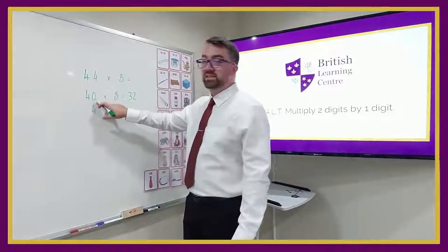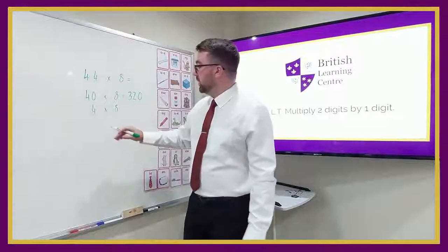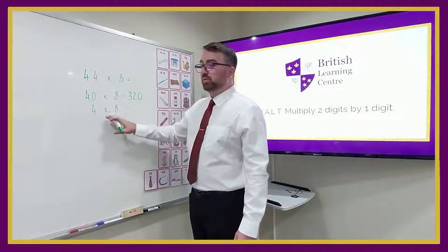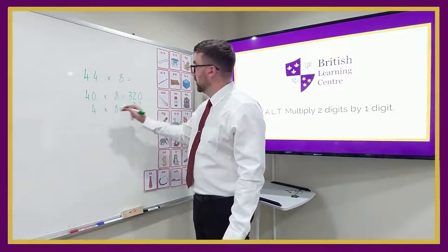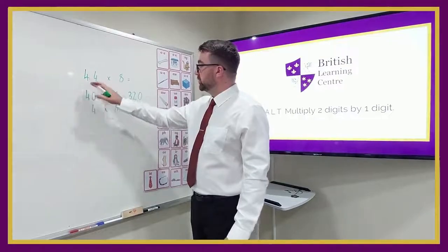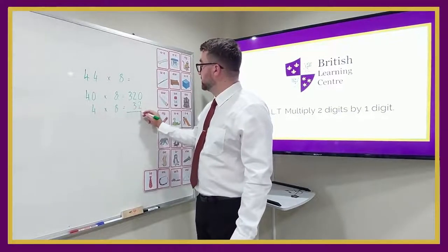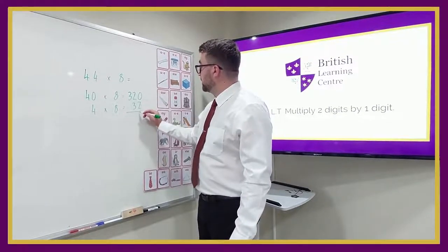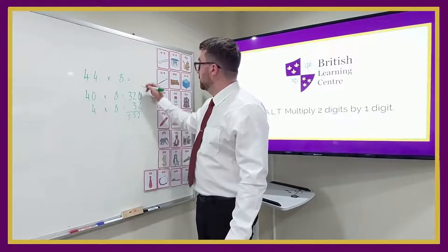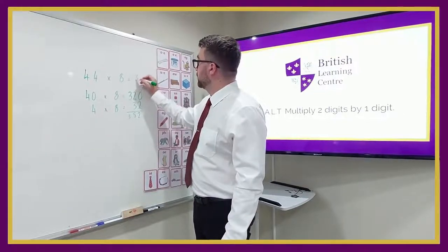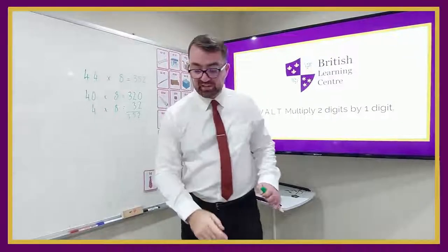Then make the number 10 times bigger: 320. Then 4 times 8 is 32. So we have 320 plus 32 — add the 2, carry the 5, giving us 352. I'm going to check my answer using the formal written method for short multiplication.